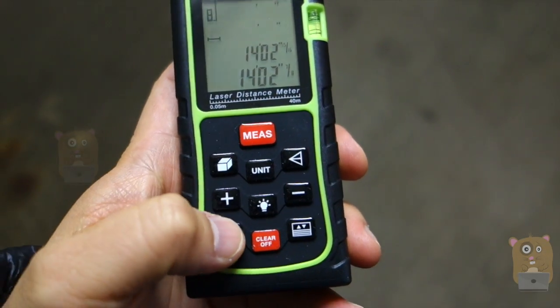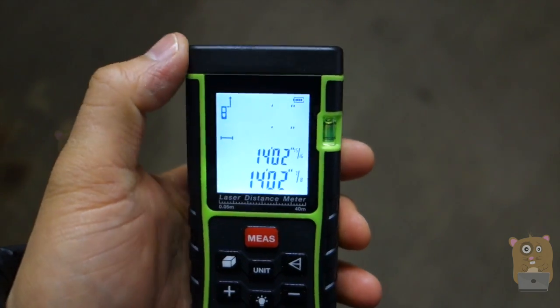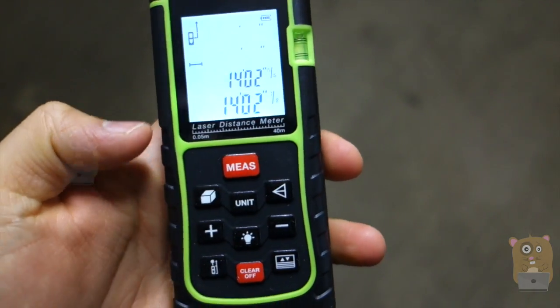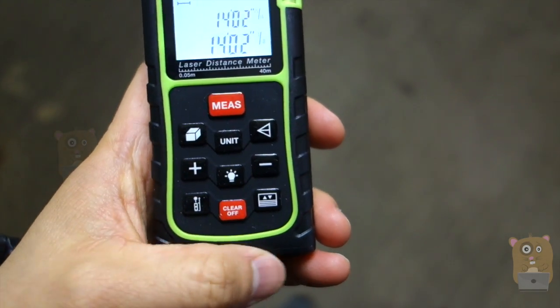I'll go through some of the other options. Here I can change it to measure from the front which is the top right here, middle which is right over here, then of course the back right down here.